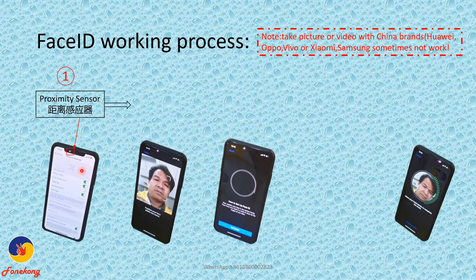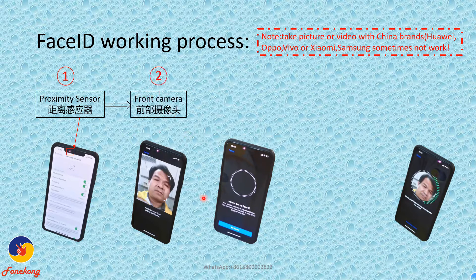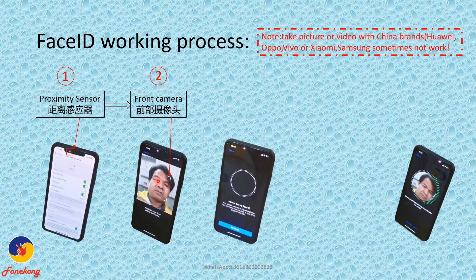Step one: the proximity sensor starts working. Remember, we use a China brand phone to take a picture or video. After you take the video, it will be much easier to catch the light. Then step two: the front camera starts working and you will see the face — the front camera takes a picture of the face.